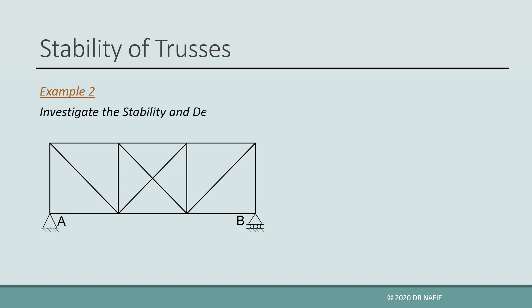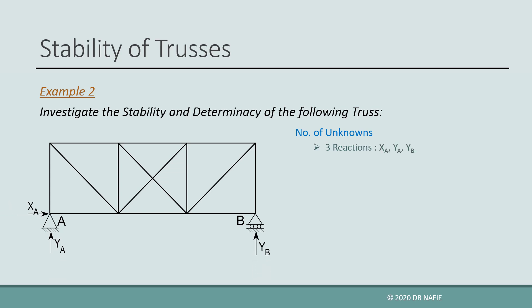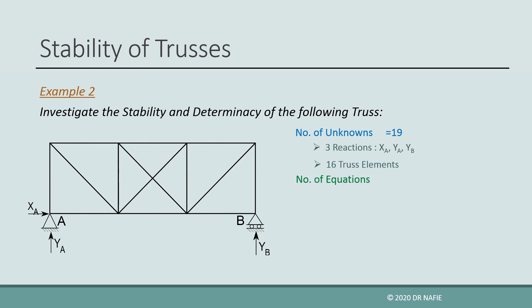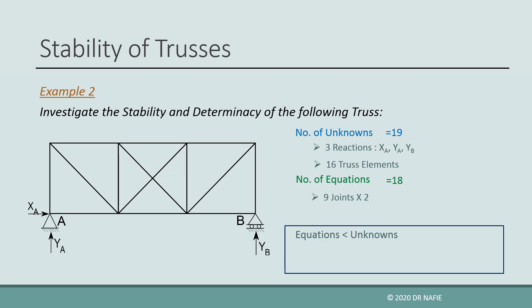Let us look at the next example. Similar to the previous example, the number of reactions is 3. However, the number of truss elements is 16, giving a total number of unknowns of 19. The total number of joints is 9, giving 18 equilibrium equations — 2 equations for each joint. Because the number of equilibrium equations is less than the number of unknowns, the truss is stable but indeterminate. The degree of indeterminacy is equal to 1.